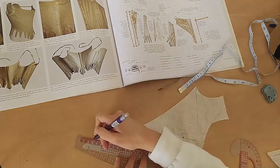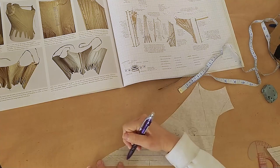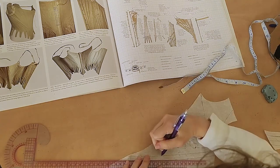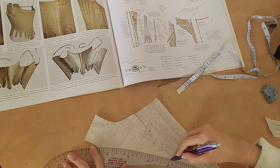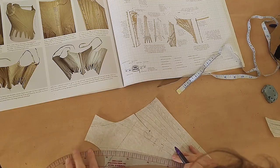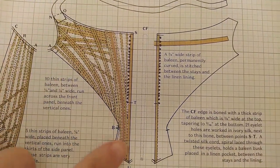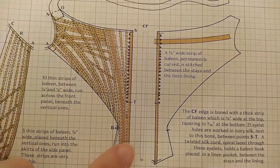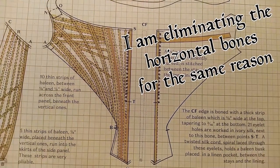For the front pattern piece we have, like the back, a bone at the edge, then a gap, and then parallel lines, until we get close to the gore, and then some boning fanning out. The original pattern has much more of a fanning boning placement, but that wouldn't really work well here, because it would cross the gore.